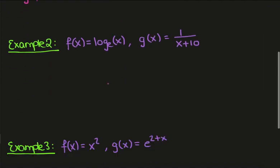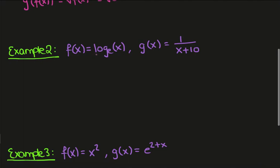Okay let's look at another example so here we have f of x is equal to the natural logarithm of x and g of x is 1 over x plus 10. Then f of g of x again we're just going to replace x with g of x. So we have log e of g of x.